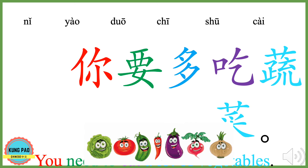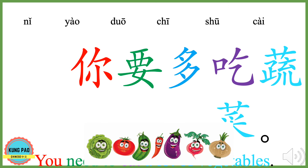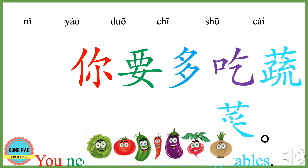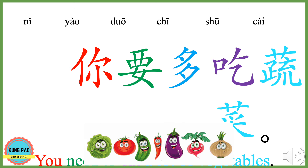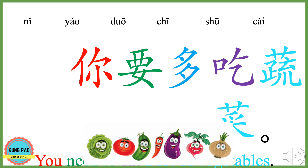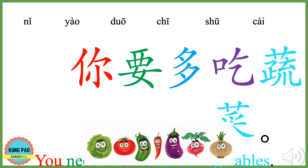Or you could say, 你要多吃蔬菜. 你 means you. 要 means need to. 多 means many or a lot of. 吃 means to eat. 蔬菜 means vegetables. Here, 多 is an adverb. It is to describe the verb 吃, to eat. 你要多吃蔬菜 — You need to eat a lot of vegetables.